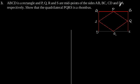CD and DA respectively, so that quadrilateral PQRS is a rhombus. Suppose ABCD is our rectangle with P, Q, R, S as the midpoints of AB, BC,